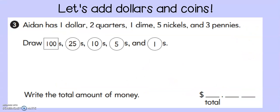Here is another problem. As you can see in this problem, we are going to need to draw the dollars and the coins. It says, Aiden has $1, two quarters, one dime, five nickels, and three pennies. So we're looking for his total amount of money. Let's draw all of those things. Let's start with $1.